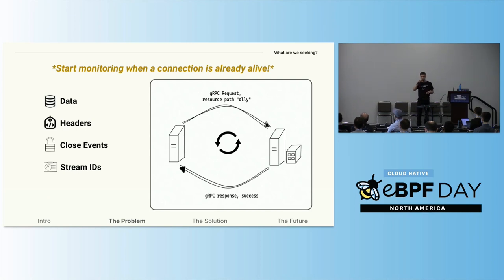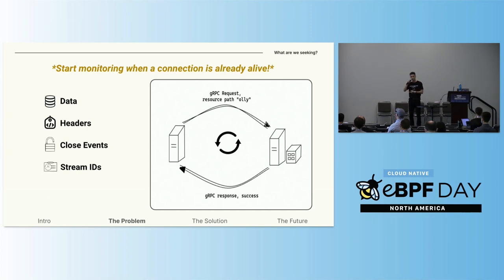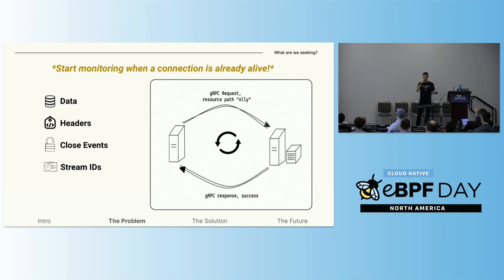gRPC connections can live for a very long time. These requests every 10 seconds could go on forever. And this means that we are most likely going to start observing the traffic when the resource name, alongside other headers, is not transmitted anymore.